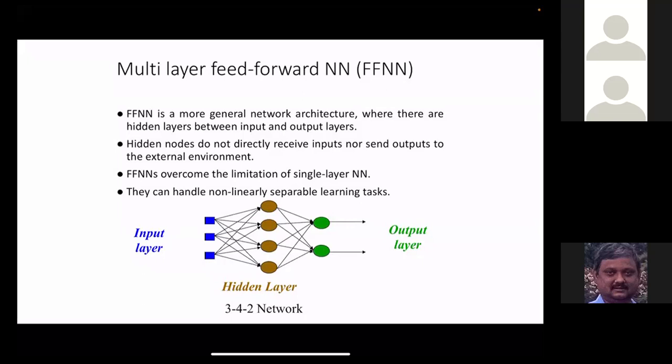To specify a fully connected feed-forward network, you just need to mention the number of layers and nodes. For example, a 3-4-2 network has three nodes in the input, four in the hidden layer, and two in the output. Each neuron has the perceptron structure we discussed: a sum of weighted inputs plus bias, with a sigmoid or other activation function applied on top.